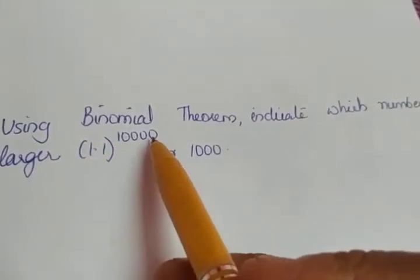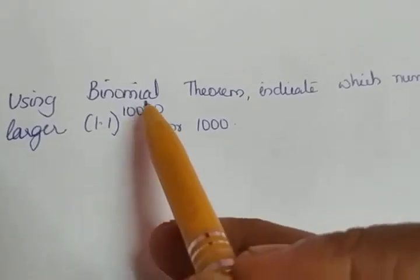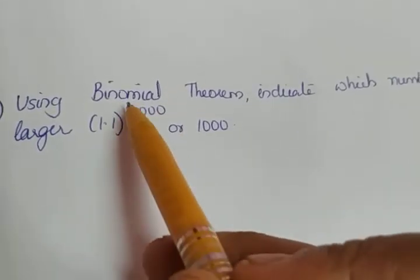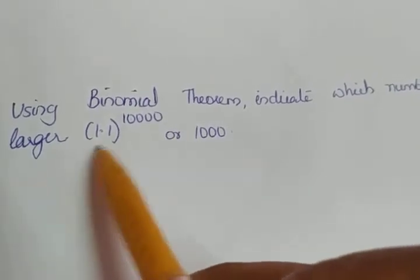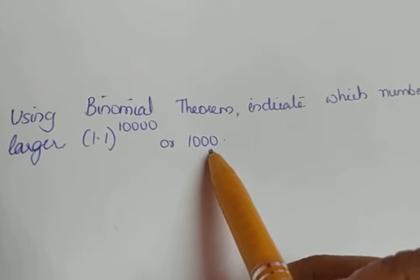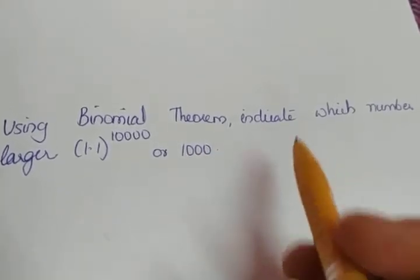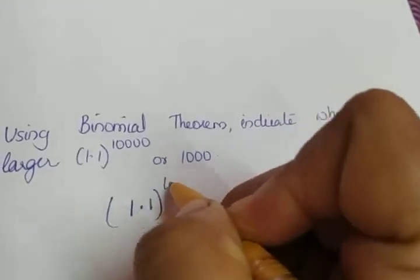Next question: using binomial theorem, indicate which number is larger, 1.1 raised to 10,000 or thousand. We have to apply binomial theorem and say which of these two numbers is larger: thousand or 1.1 raised to 10,000. Thousand has a definite value, so we're leaving that case and going to take 1.1 raised to 10,000.